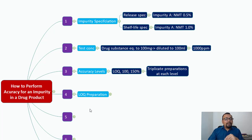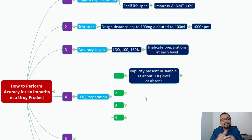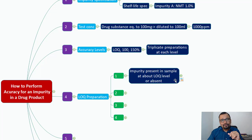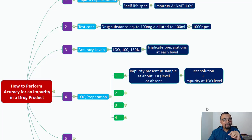Let us begin with the first accuracy solution at the LOQ level. How are you going to prepare the accuracy solution at the LOQ level? There can be different possibilities: impurity may be present in the sample at around LOQ level, or there is no impurity present. Assume that your test sample does not contain impurity A, or there is a presence of impurity A but at around the LOQ level. In that situation, you can use the same test solution and spike the impurity at around LOQ level.